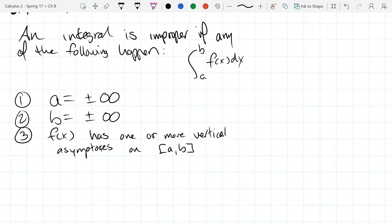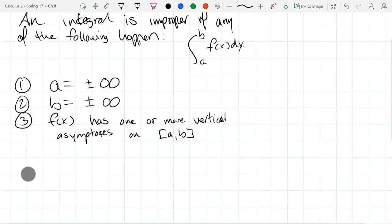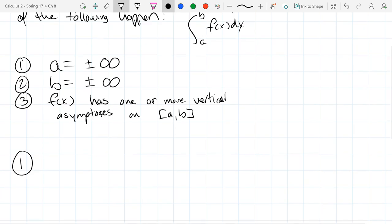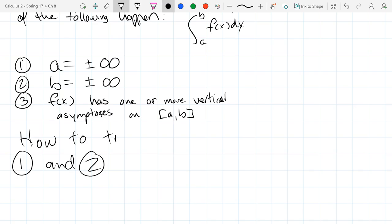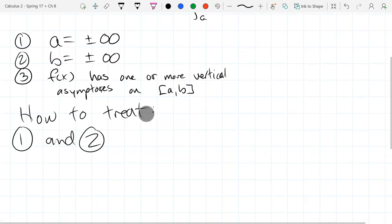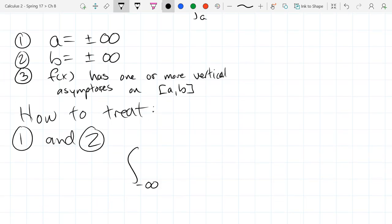And we'll deal with one and two first. They're a little easier. Dealing with number three is a little bit more tricky. So this is how to treat one and two. So we don't actually know how to do antiderivatives or integrals from negative infinity or positive infinity.